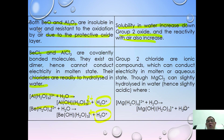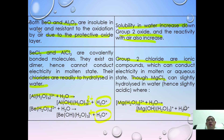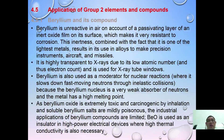All other group 2 chlorides are ionic, and only magnesium chloride can slightly hydrolyze in water. That concludes the discussion on the anomalous behavior and diagonal relationship between beryllium and aluminium.